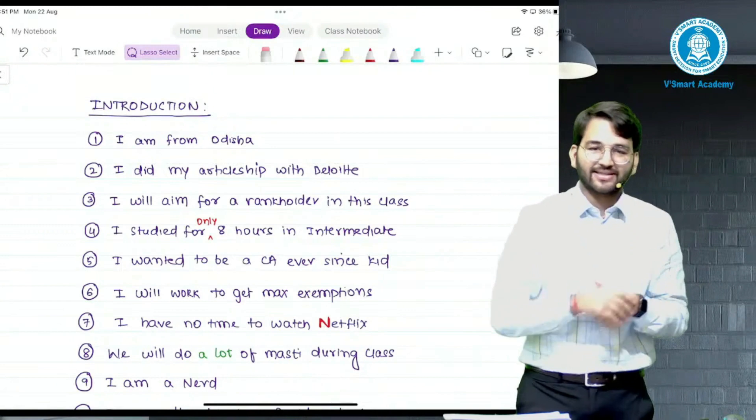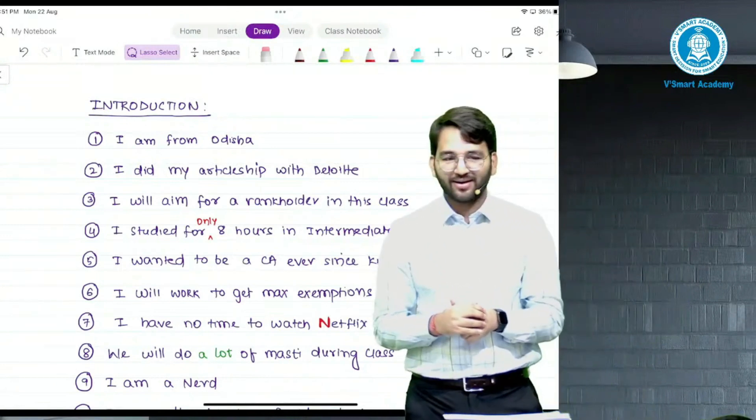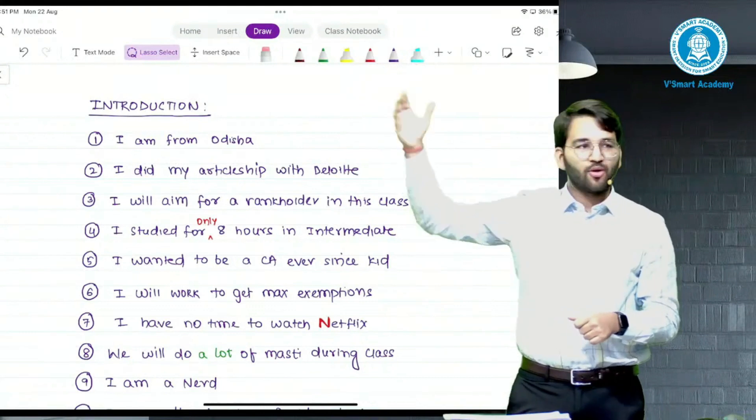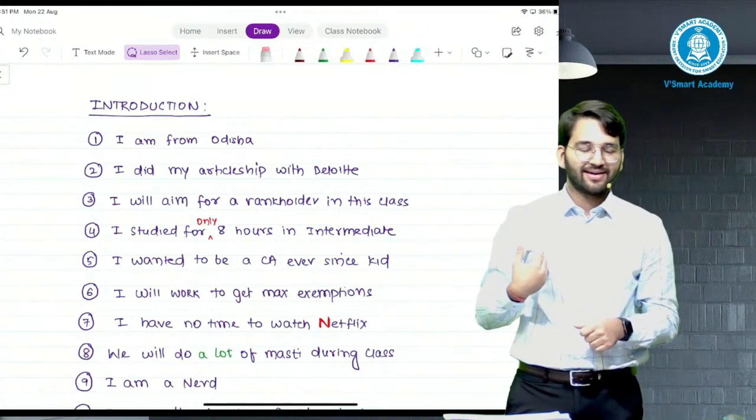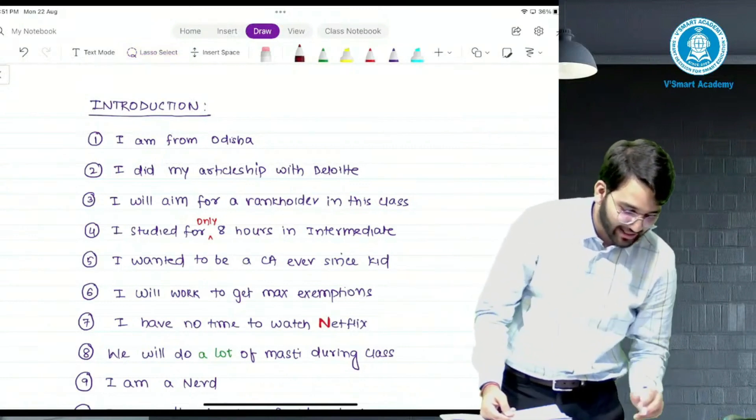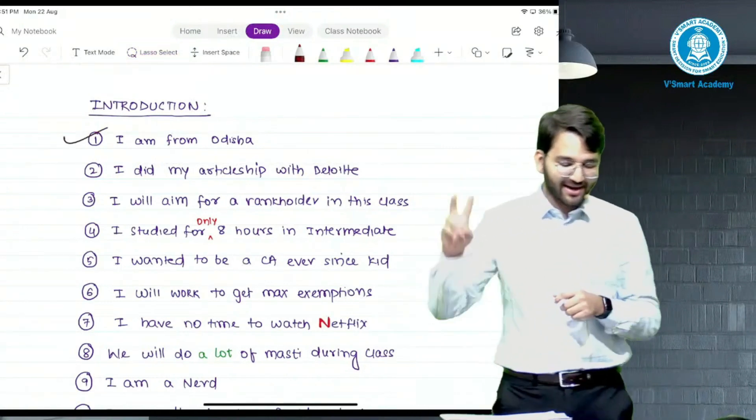The second thing, which is actually the first point: I am from Odisha. Is there anyone from Odisha? Yes, I am from Odisha. This is correct. So remember, 5 things are right and 5 things are wrong.